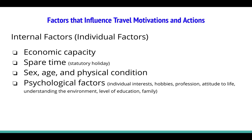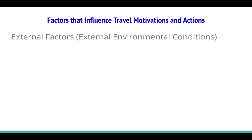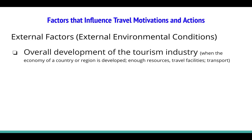Moving to external factors — things you cannot fully control. External environmental conditions include the overall development of the tourism industry. Your decision depends on the infrastructure of the destination and whether the economy is developed, because a developed economy means good infrastructure to support tourism. Enough resources means transportation, accommodation, eating facilities, and other tourist needs are supplied by the destination.